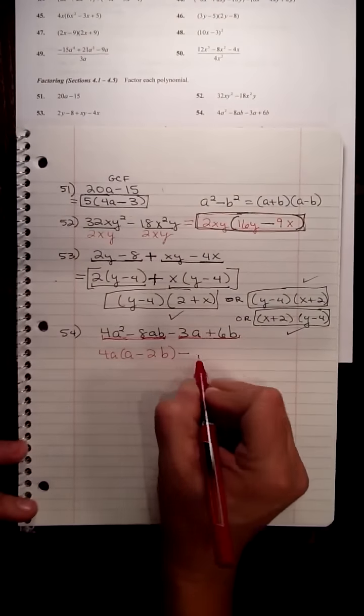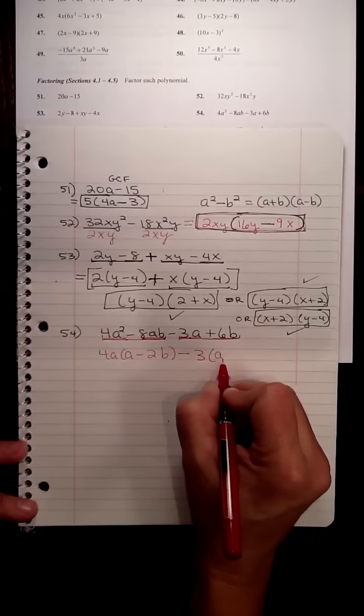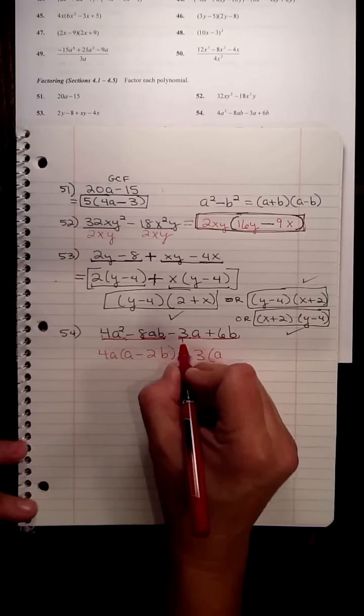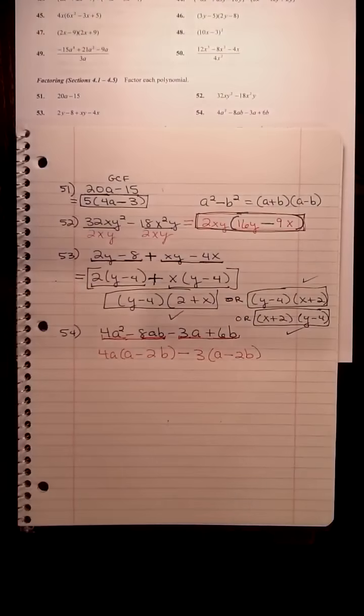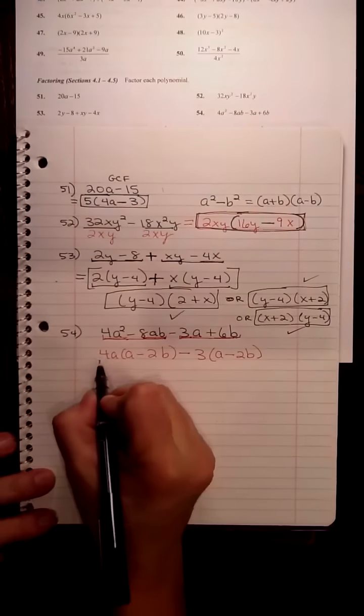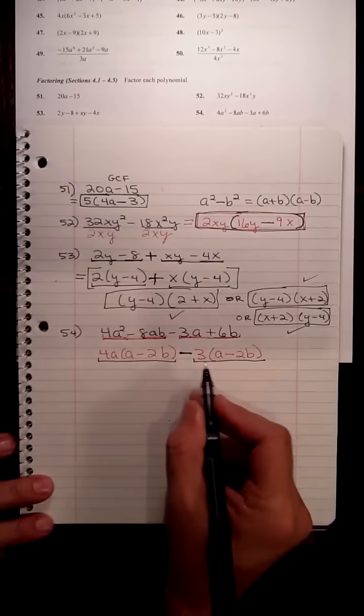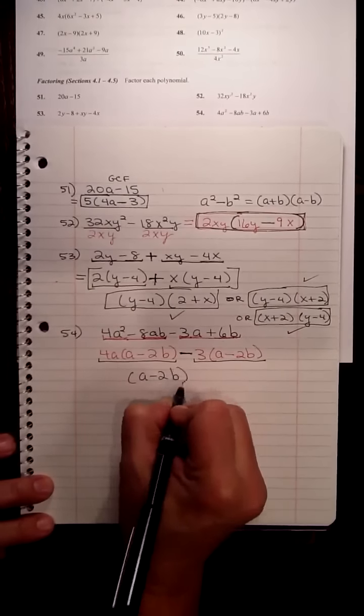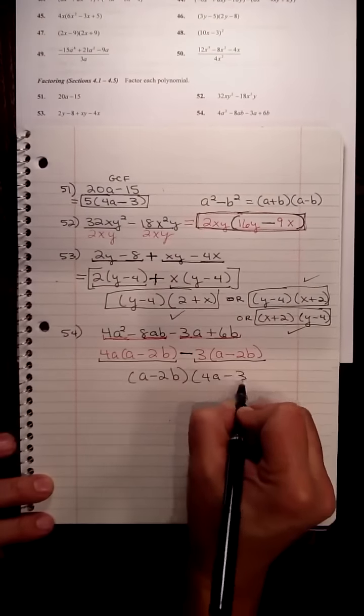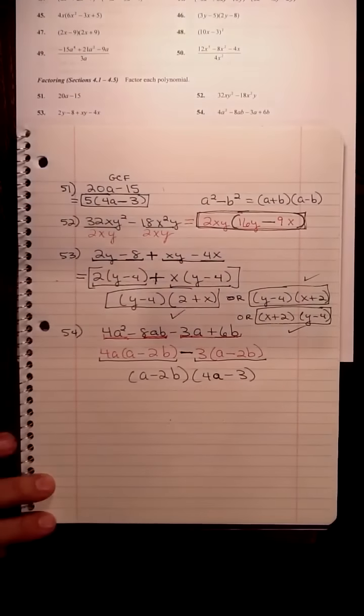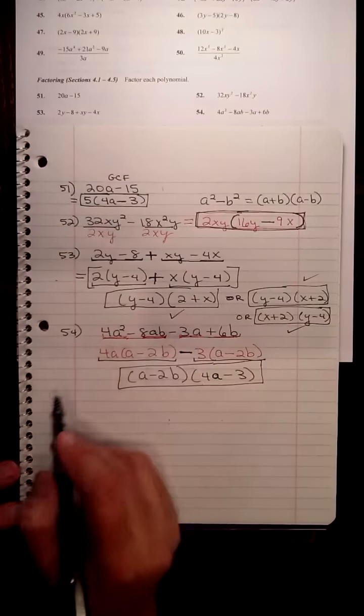When you have a minus in the middle, you take out minus what's in common to the second two, which is just a 3. And then you have, dividing by negative 3, we'd have two negatives, positive a, divide by negative 3, you have negative 2b. And we got lucky, and we usually do, to have two giant terms connected with subtraction, and they both have a minus 2b as a common factor. So when we get that out of the way, we have a 4a minus 3 still left behind. So this is the factored form for number 54.